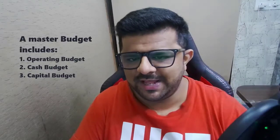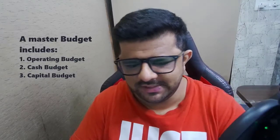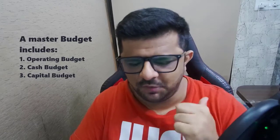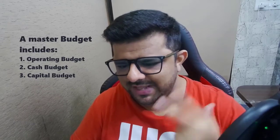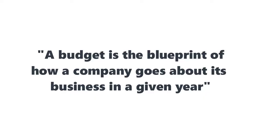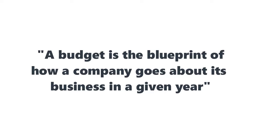Generally, there is a master budget and it includes three components: the operating budget, the cash budget, and the capital budget. A budget is the blueprint for how a company does business in a given year. It dictates where to invest, where to allocate or cut resources, and where to specifically focus effort.